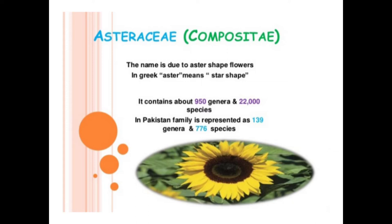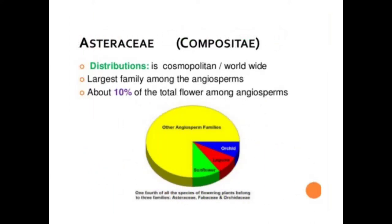The family Asteraceae, alternatively Compositae, consists of over 22,000 known species of flowering plants in over 950 genera within the order Asterales. It is commonly referred to as the Aster, Daisy, Composite, or Sunflower family. Compositae were first described in 1740.